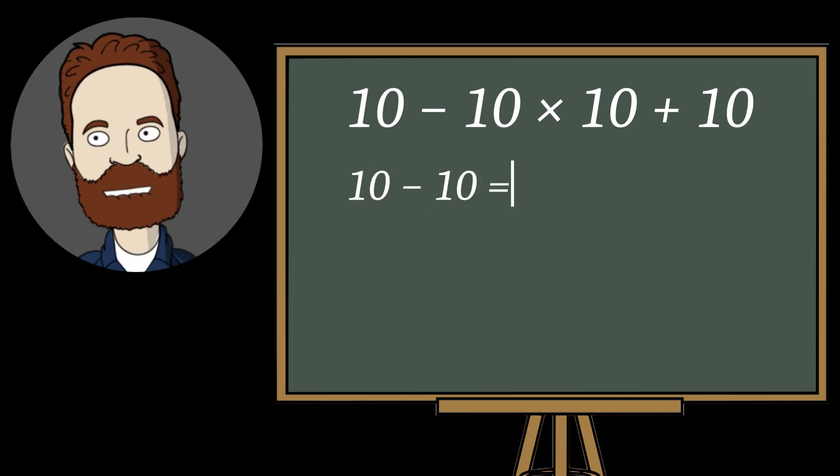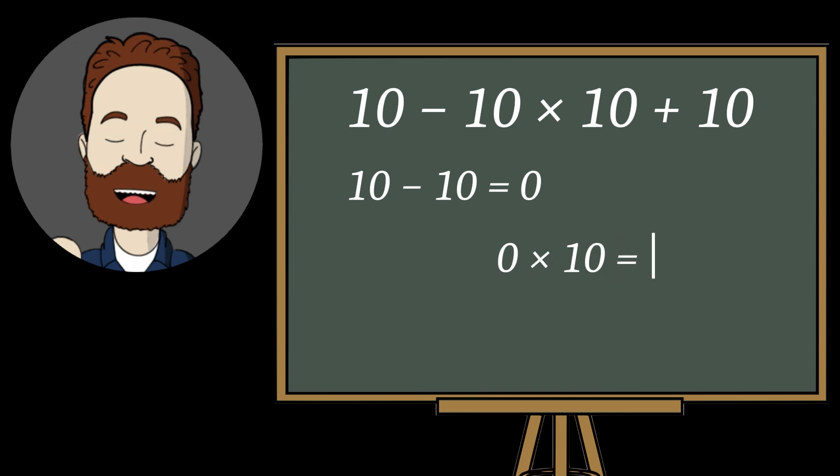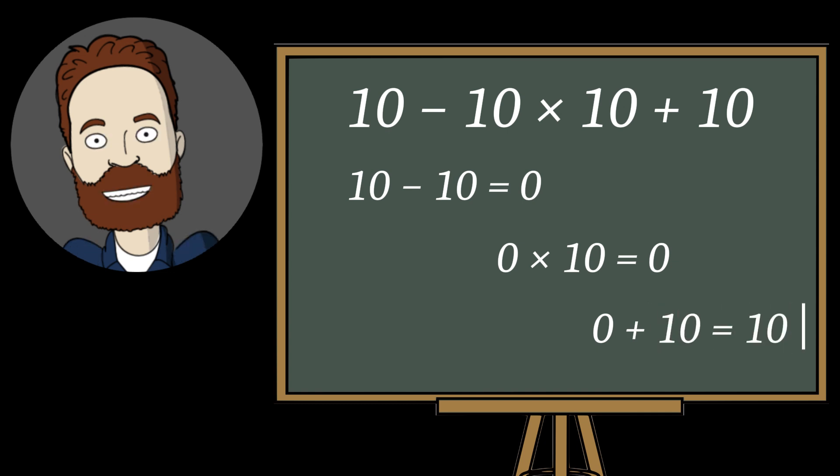10 minus 10 gives 0. Then 0 times 10, still 0. And finally, 0 plus 10 equals 10.